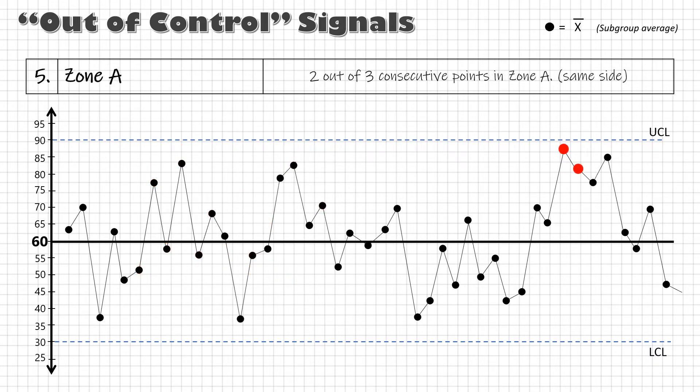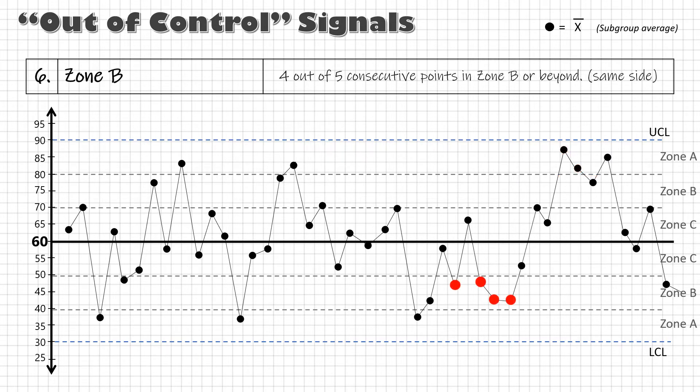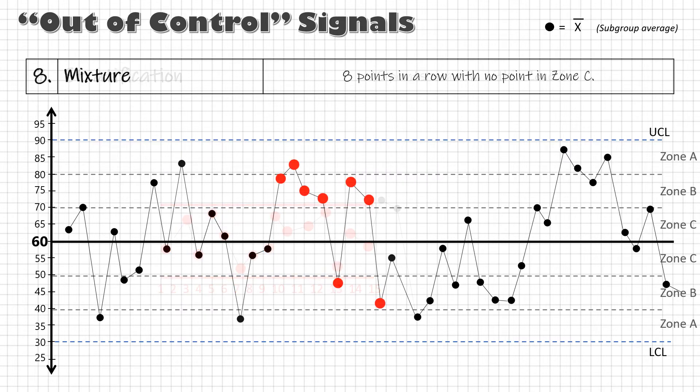Now if we divide the area between control limits in three equal zones then the next is zone A. Two out of three consecutive points in zone A on the same side. Sixth is zone B. Four out of five consecutive points in zone B or beyond on the same side. Seventh is stratification. Fifteen points in a row within zone C. And finally mixture. Eight points in a row with no points in zone C.